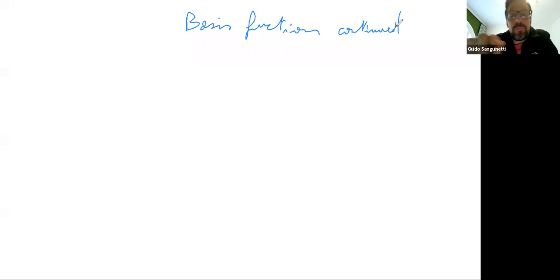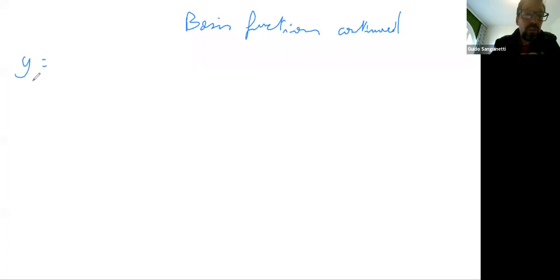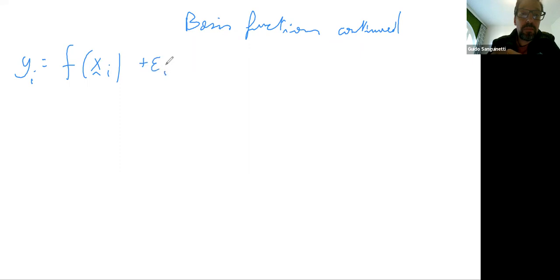So the setup is: we want to perform regression. That would be the standard setup where we have observations y_i that are a function of some input x_i. Typically we take y_i to be a scalar and x_i to be a vector, plus some linear Gaussian noise.